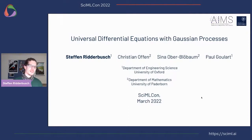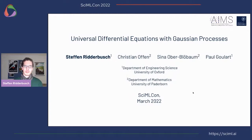In this talk, I want to talk about universal differential equations, which we all know with neural networks, but now let's talk about how this could potentially be done with Gaussian processes. This is based on work that I've done with Paul Goulart, as a student at Oxford University for the Centre of Doctoral Training in Autonomous Intelligent Machines and Systems, in collaboration with Christian Offen and Sina Ugold-Loebaum from the University of Paderborn in Germany.